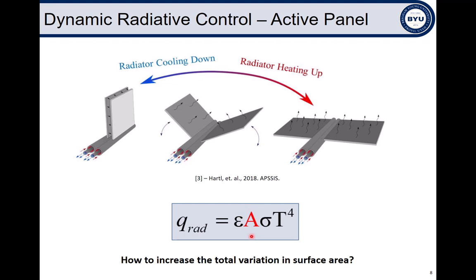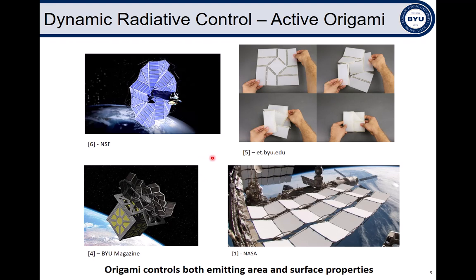For deployable surfaces, large variations in surface area provide significant control of radiative heat transfer, but how do we increase the total variation in surface area? So that's where origami comes in. Origami tessellations, or repeating fold patterns, provide a framework by which surfaces with significant variation in surface area might be synthesized. Origami tessellations provide patterns that may be stored easily on board a spacecraft. Likewise, origami is gathering space heritage as more and more projects turn to origami to solve packaging and deployment challenges. And most importantly, the idea of origami for radiative heat transfer control is so enticing because these surfaces provide control of both emitting area and radiative surface properties.